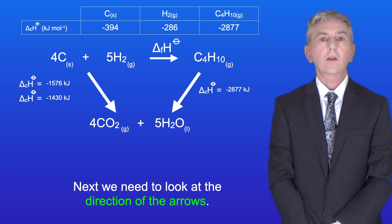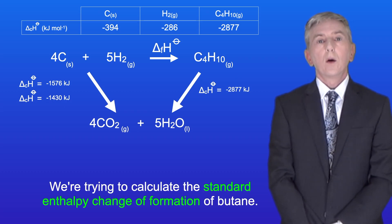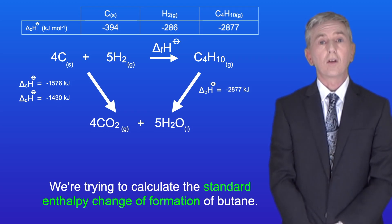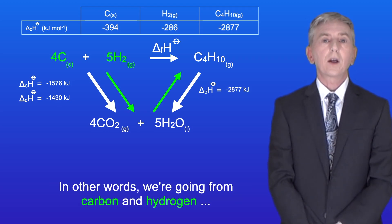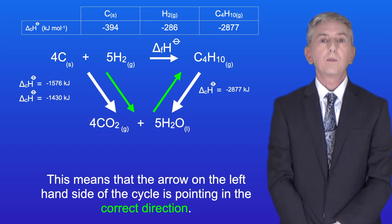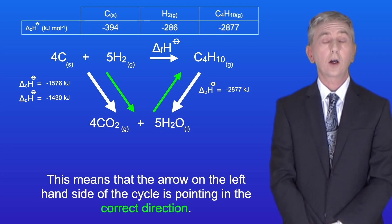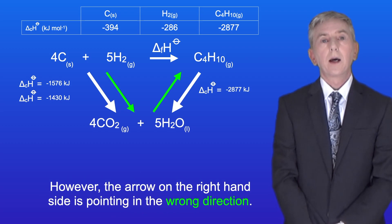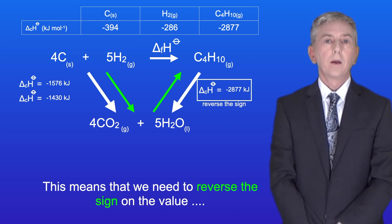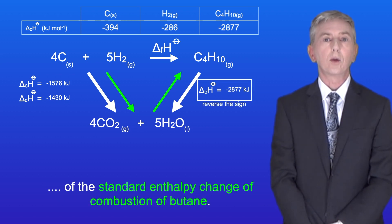Next we need to look at the direction of the arrows. We're trying to calculate the standard enthalpy change of formation of butane — in other words we're going from carbon and hydrogen to butane. This means that the arrow on the left hand side of the cycle is pointing in the correct direction. However the arrow on the right hand side is pointing in the wrong direction, so we need to reverse the sign on the value of the standard enthalpy change of combustion of butane.